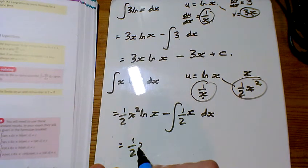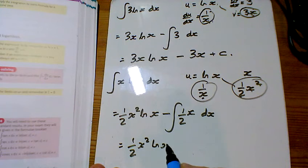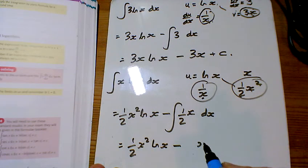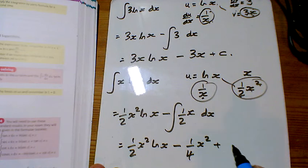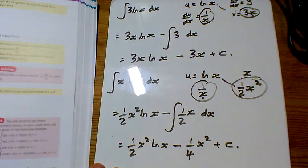And so, the answer, 1 half x squared ln x minus this power goes up by 1, divide by the extra two, and the plus c on the end as usual.